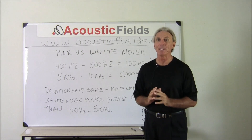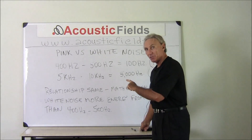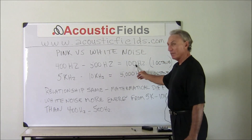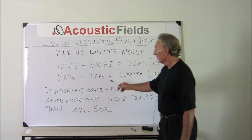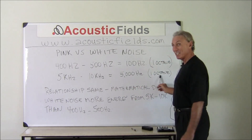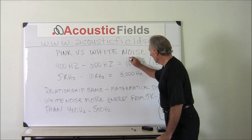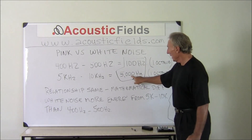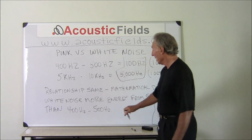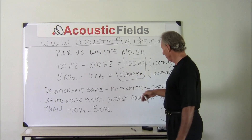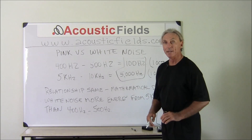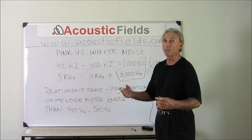Let's illustrate this point through example, because this gets to the real core of the issue. From 400 cycles to 500 cycles, that's a 100 Hz difference — that's one octave. From 5,000 cycles through 10,000 cycles, that's 5,000 Hz, but it's still one octave. Look at this ratio: each one of those higher frequencies is exponentially greater in mathematical number. So we have more frequencies. The octave relationship is the same, but look at the huge mathematical difference. White noise has more energy from 5k to 10k than from 400 to 500, because there are simply more frequencies in that range.